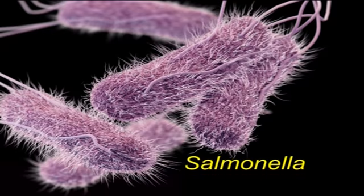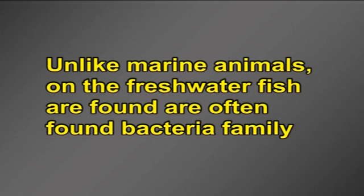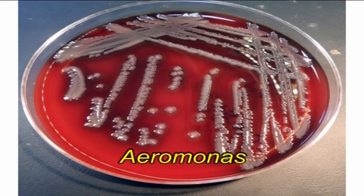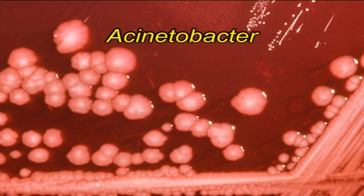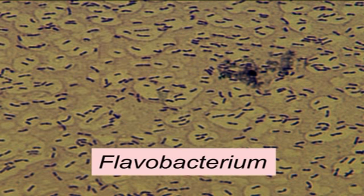These bacteria do not multiply to an appreciable degree at refrigerator temperatures. Salmonella, Escherichia coli and other bacteria found on chickens are mesophiles. Unlike marine animals, on freshwater fish are often found bacteria of the family Enterobacteriaceae and the genus Aeromonas. Mollusks meat is contaminated with a large number of microorganisms — 10^4 to 10^6 per gram — especially gram-negative bacteria such as Vibrio, Pseudomonas, Acinetobacter, Moraxella and Flavobacterium.